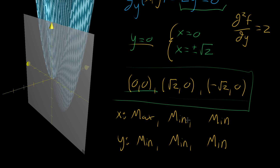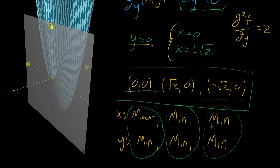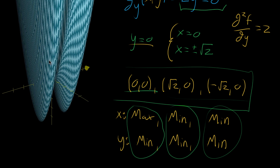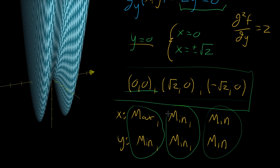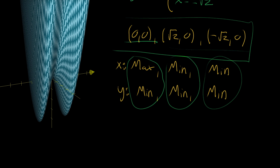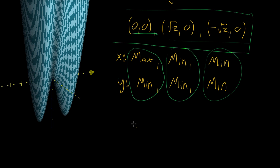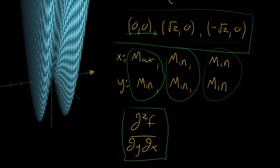It might be tempting to think you're done — that in the x and y directions they disagree about whether the origin is a maximum or minimum, which is why it looks like a saddle point, and they agree on the other two points being minima. However, that's actually not enough. There are examples where this kind of analysis leads to the wrong conclusion — you'd conclude a point is a local minimum when it's actually a saddle point. The basic reason is that you need to take into account the mixed partial derivative term to make full conclusions.